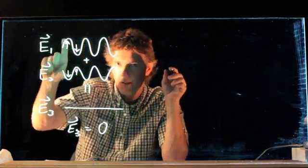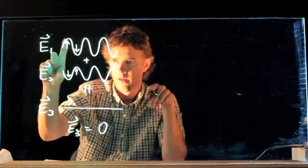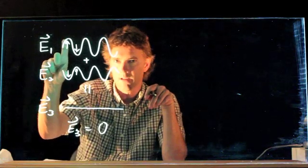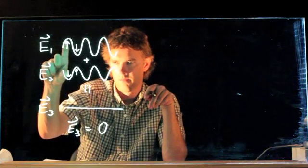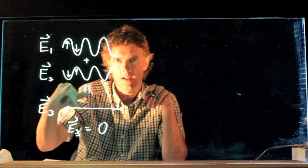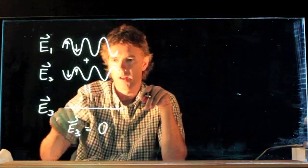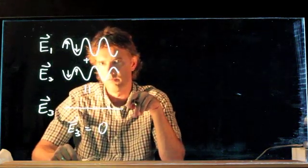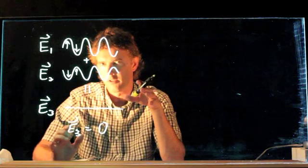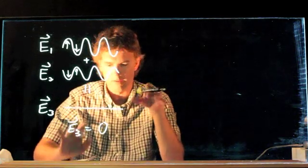So in fact, E3 equals zero the whole way. If these things are the same strength, namely the height of the electric field is the same, and they are exactly flipped, then the resultant is zero. You've essentially canceled out that wave entirely. So this is something called destructive interference.